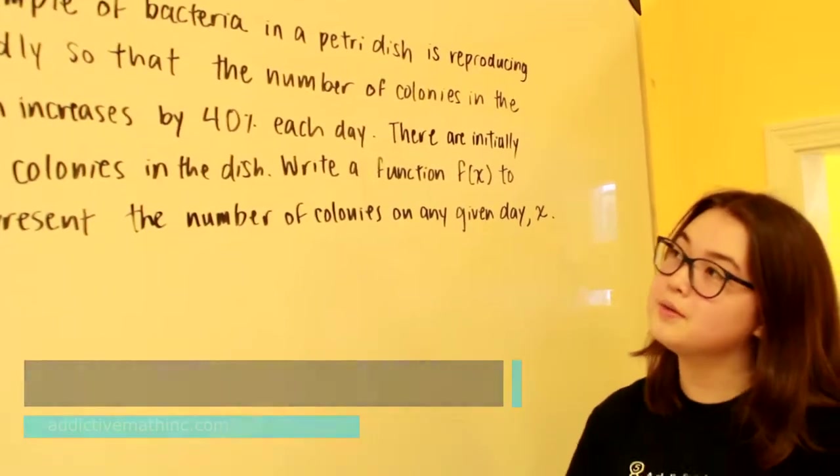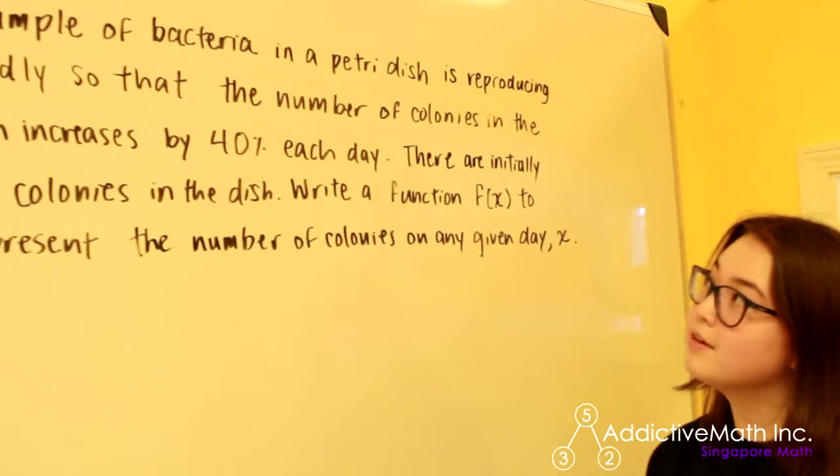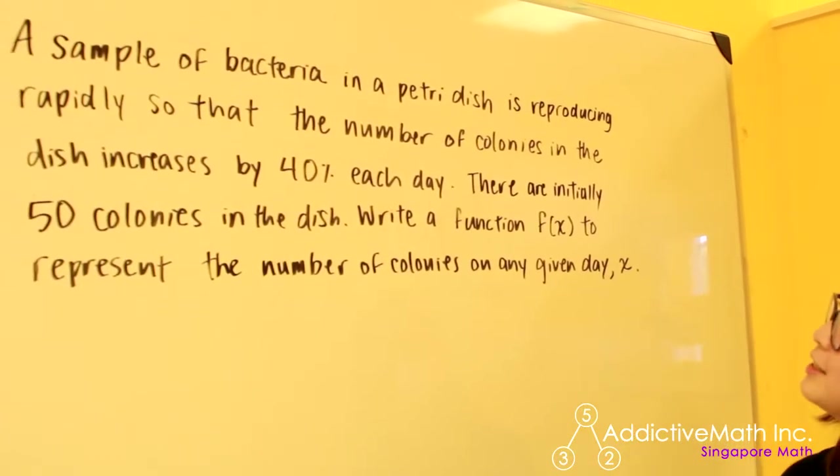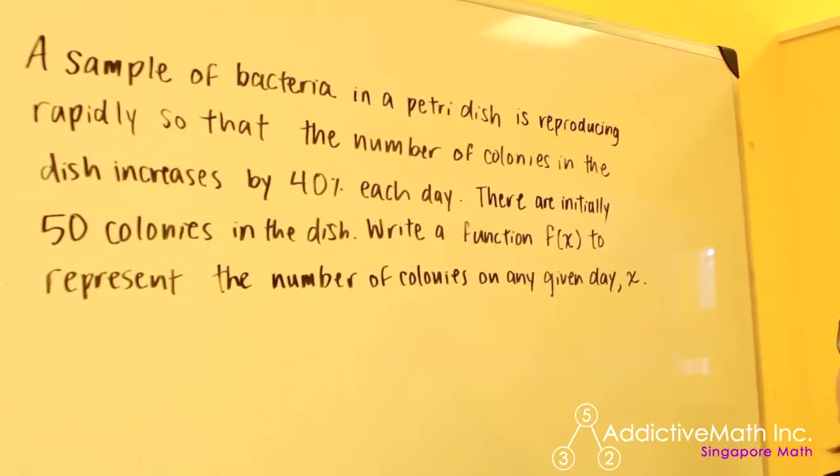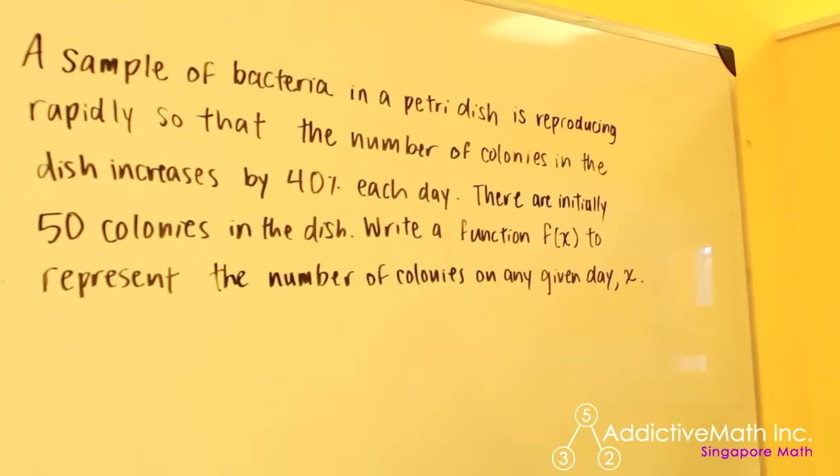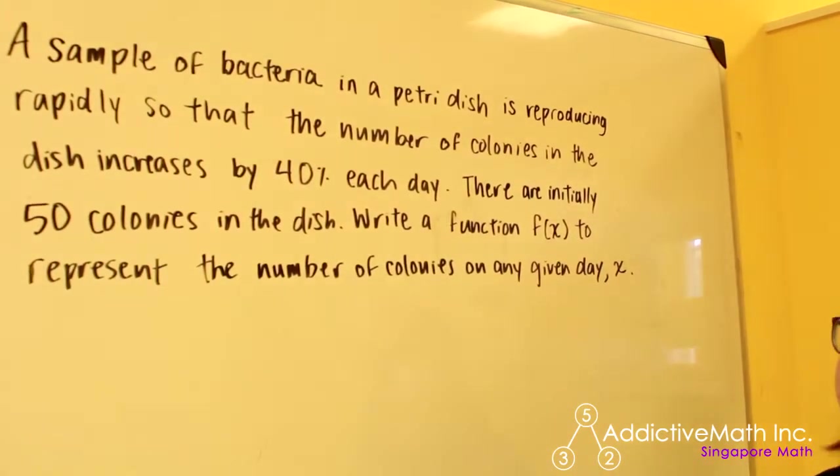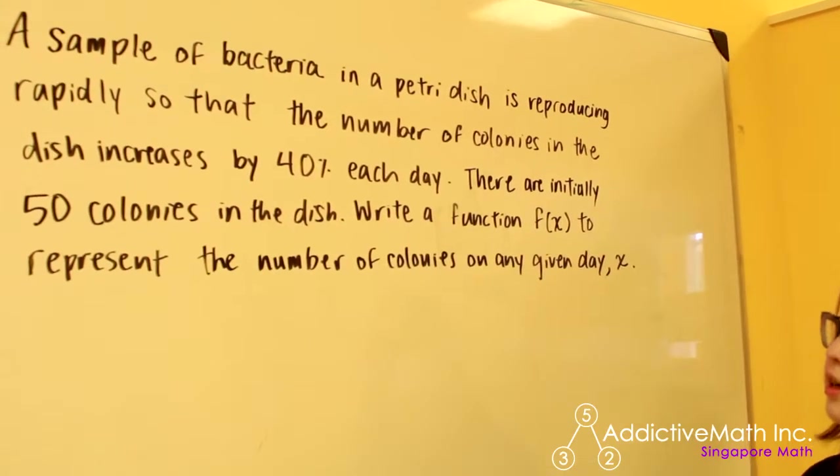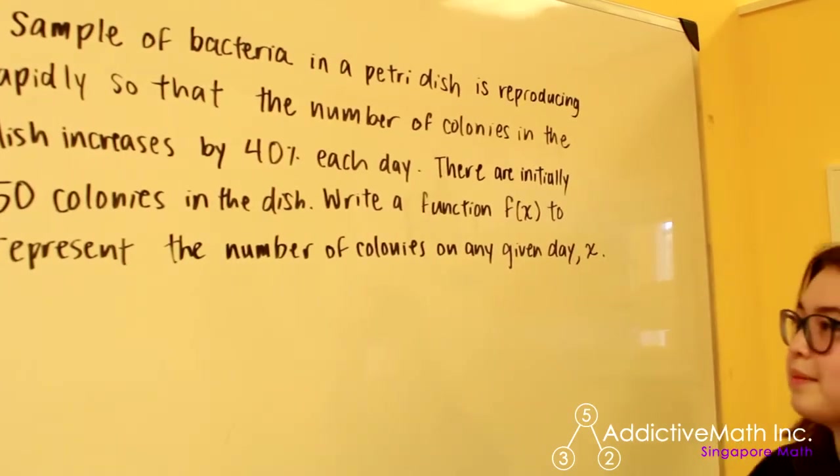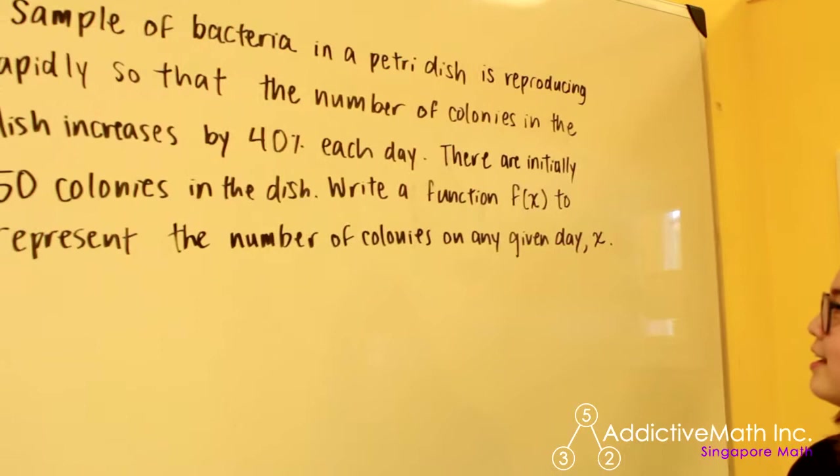The problem says that a sample of bacteria in a petri dish is reproducing rapidly so that the number of colonies in the dish increases by 40% each day. There are initially 50 colonies in the dish. Write a function f(x) to represent the number of colonies on any given day x.